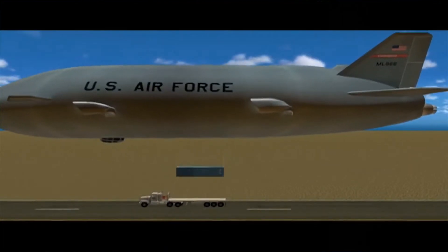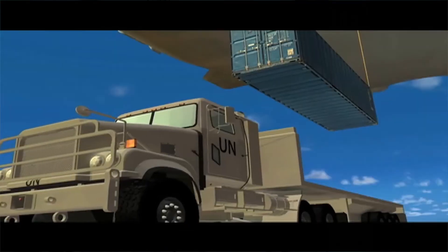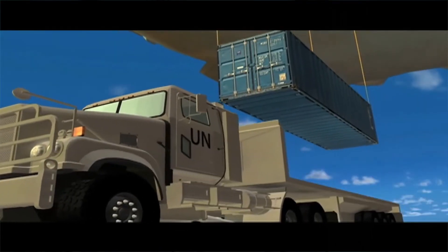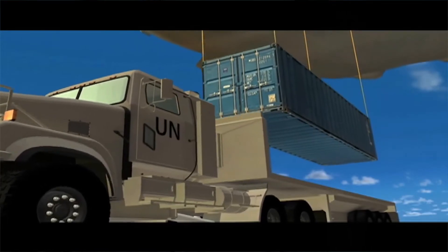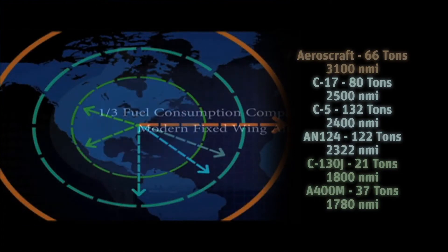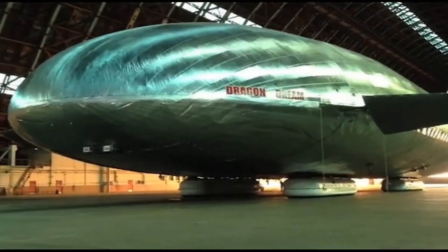Back in the day, airships carried passengers, cargo, and planes. But whenever they traveled to a destination, they needed a payload source to re-ballast the aircraft. If 65 people get off, you have to replace that weight. Our aircraft does it internally — we can recreate ballast inside the aircraft.